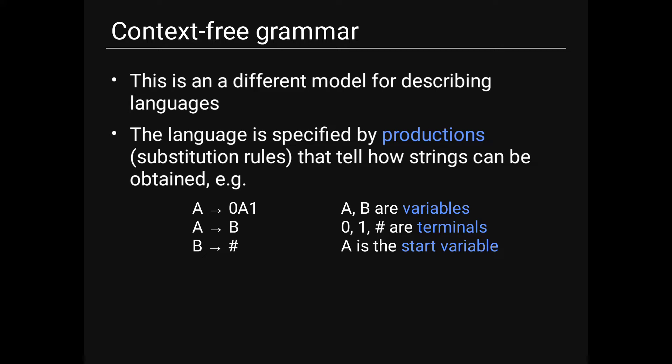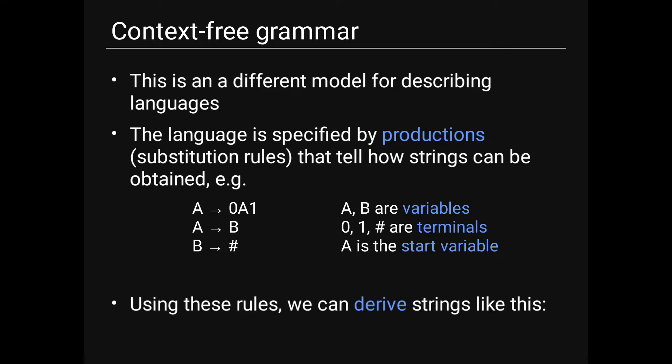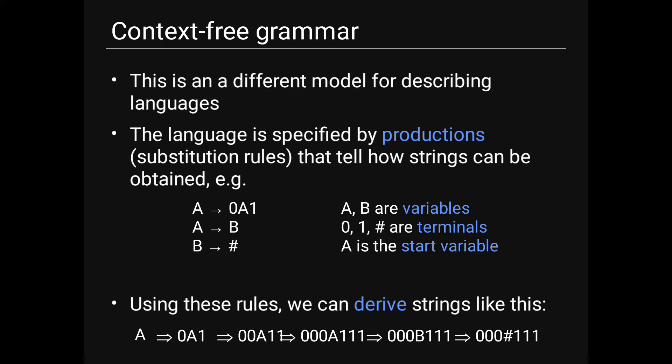This is a different model for describing languages. The language is specified by productions, also called substitution rules, that tell how strings can be obtained. For example: A → 0A1, A → B, and B → #. Here A and B are variables, 0, 1, and # are terminals, and A is the start variable. Using these rules we can derive strings: A → 0A1 → 00A11 → 000A111 → 000B111 → 000#111.